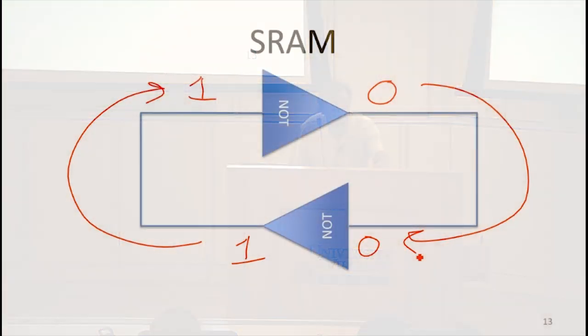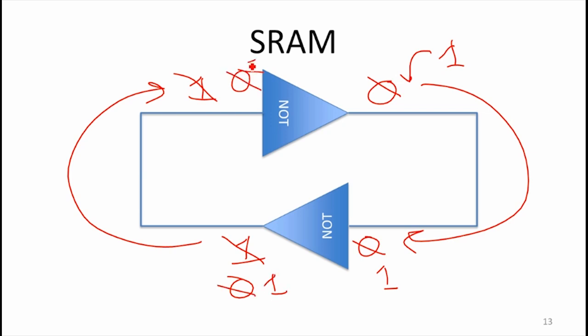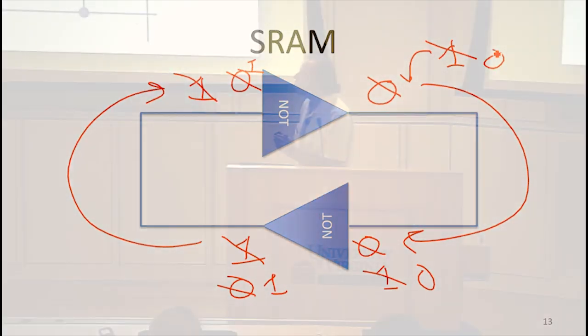If we change the value of this to a 1, that's going to need to change everything else as well. There are only two stable configurations for this, and we can use those two stable configurations to represent the two possible values of a bit. Assuming the gates work correctly, it can't get into some strange state where it doesn't represent one of those two things.